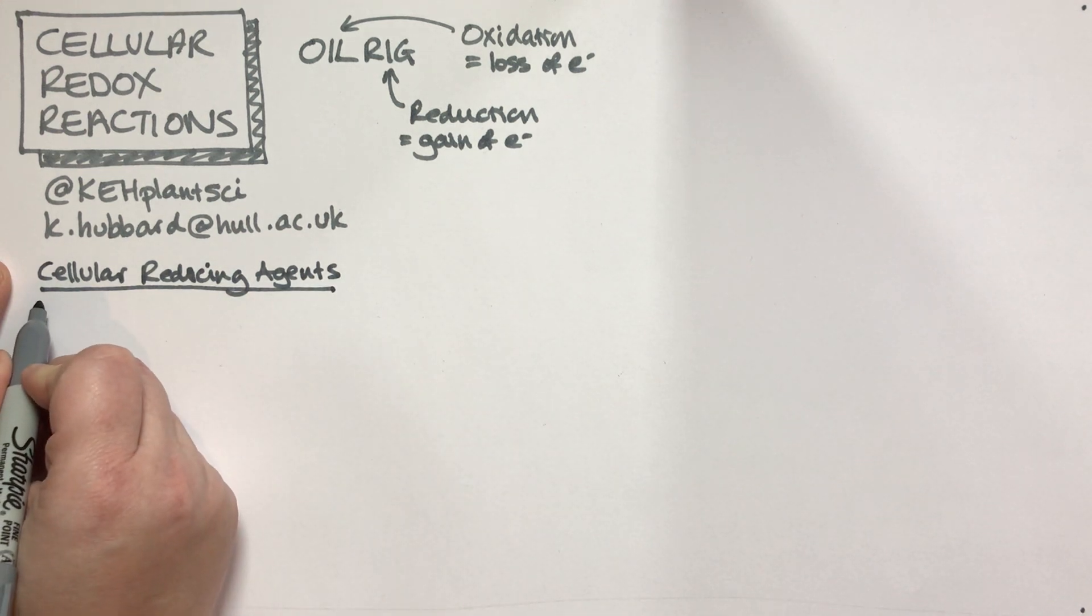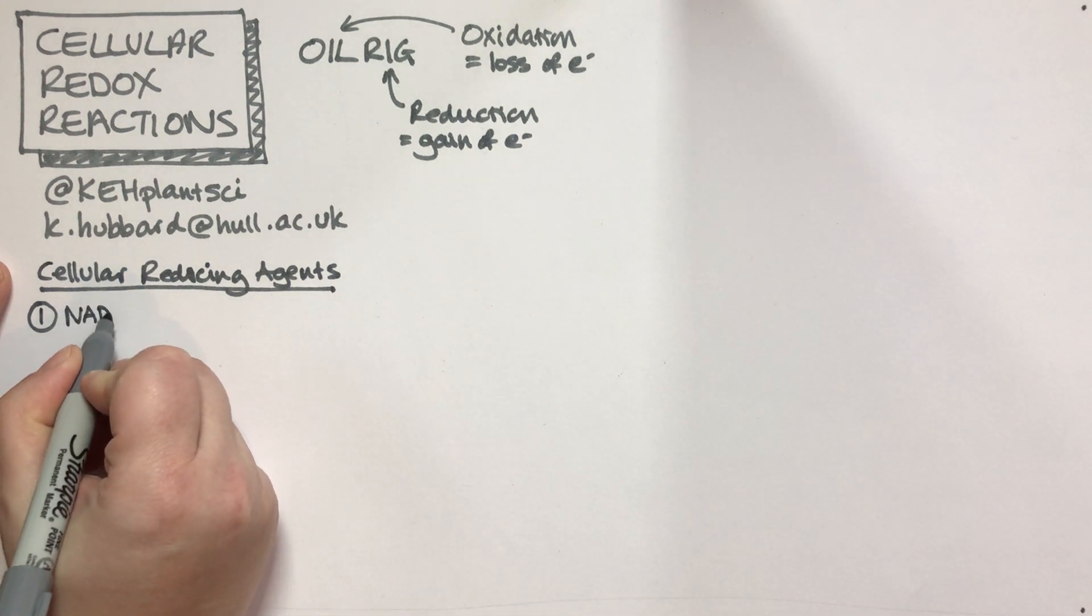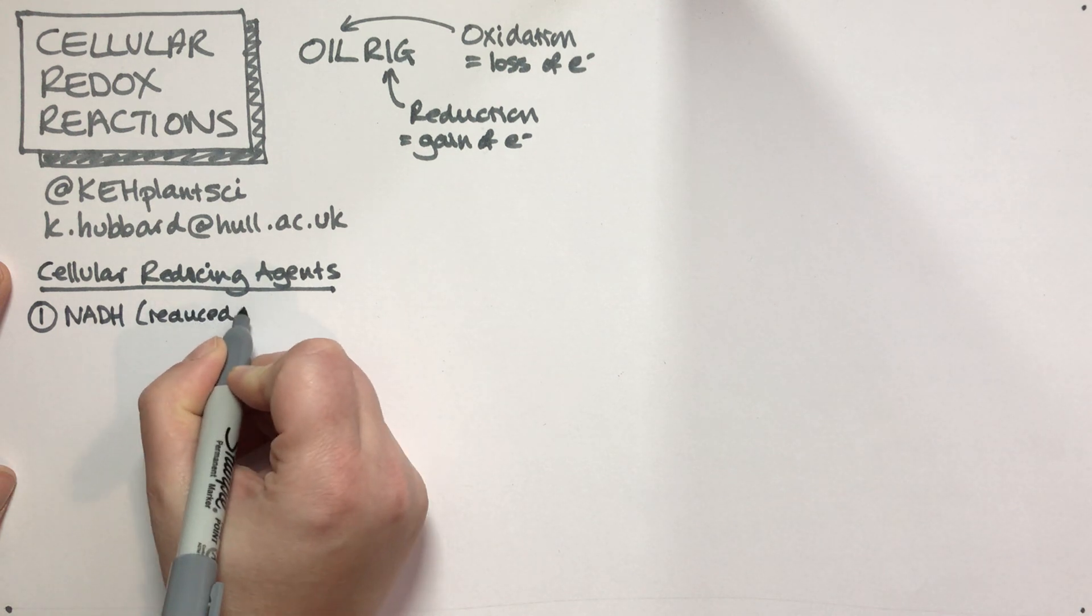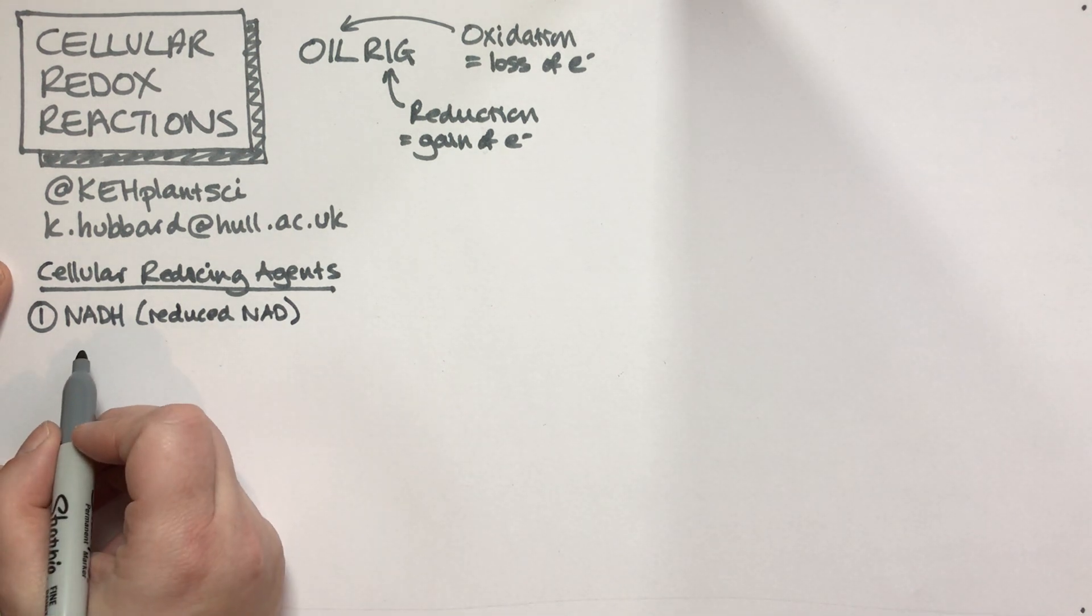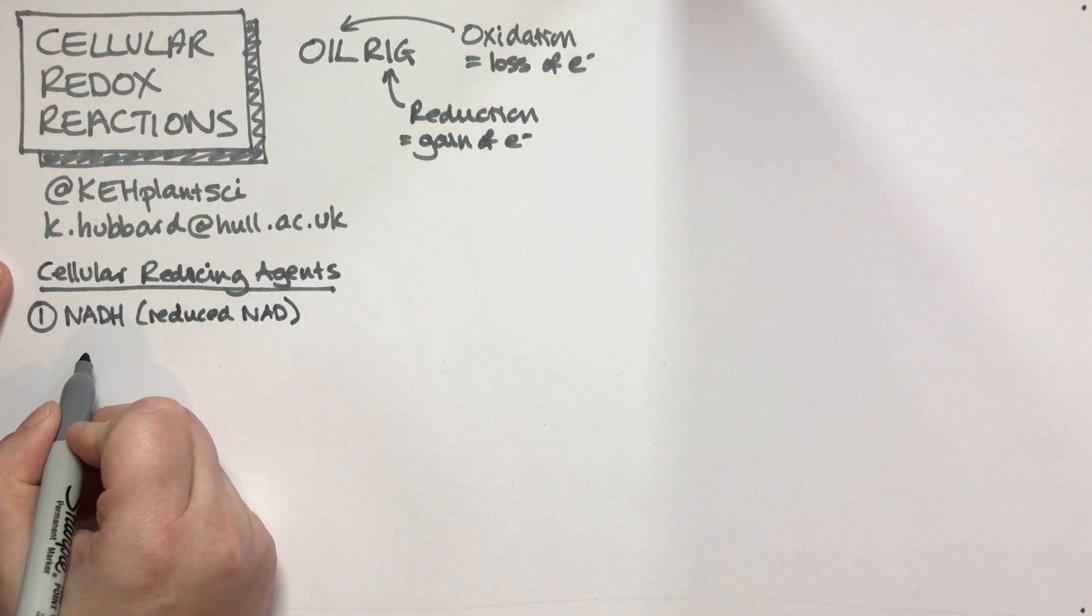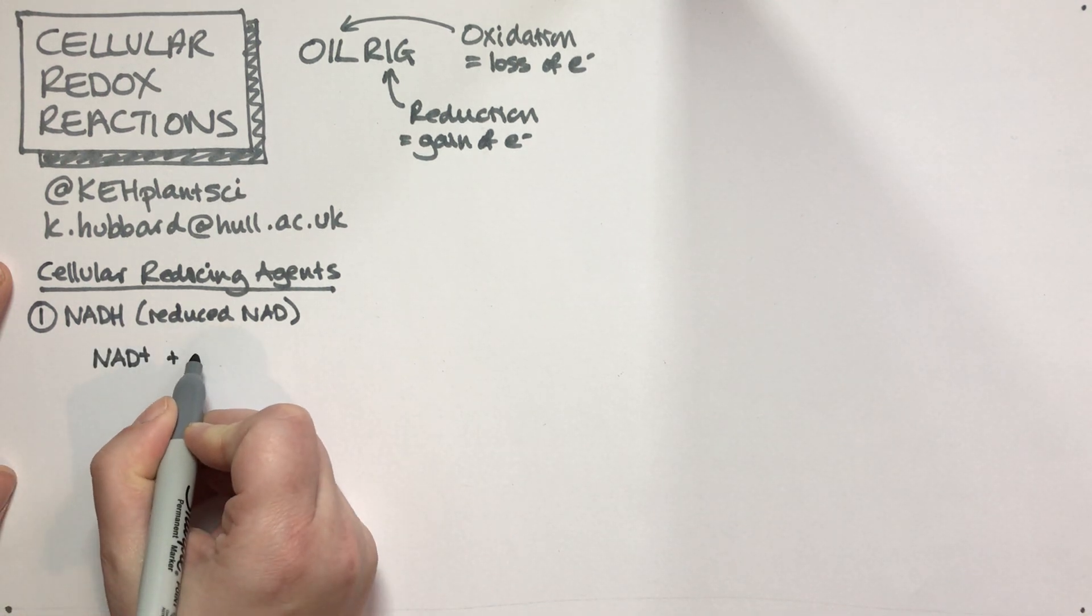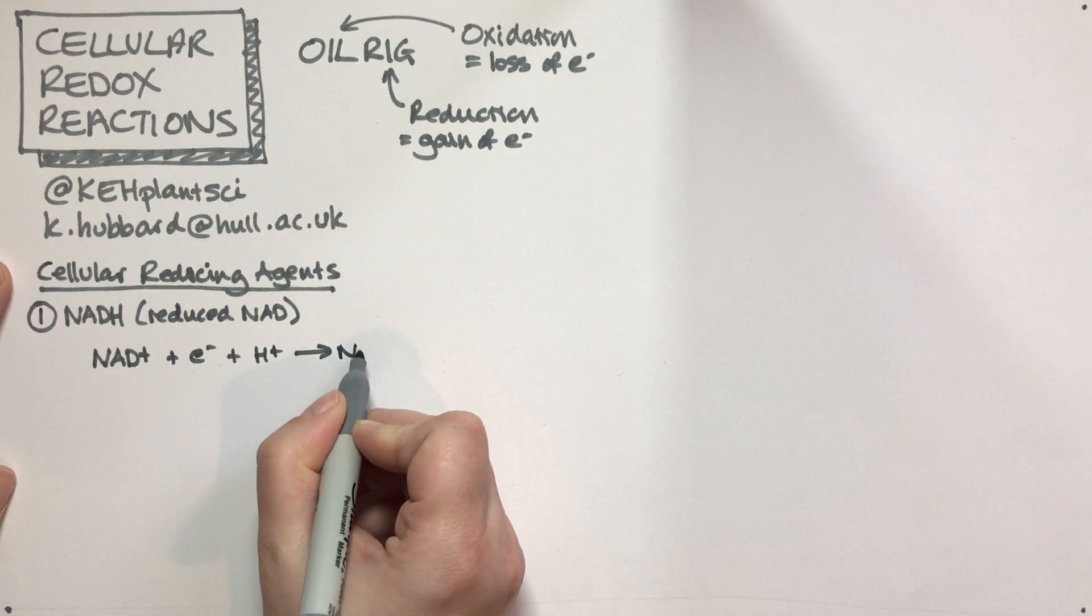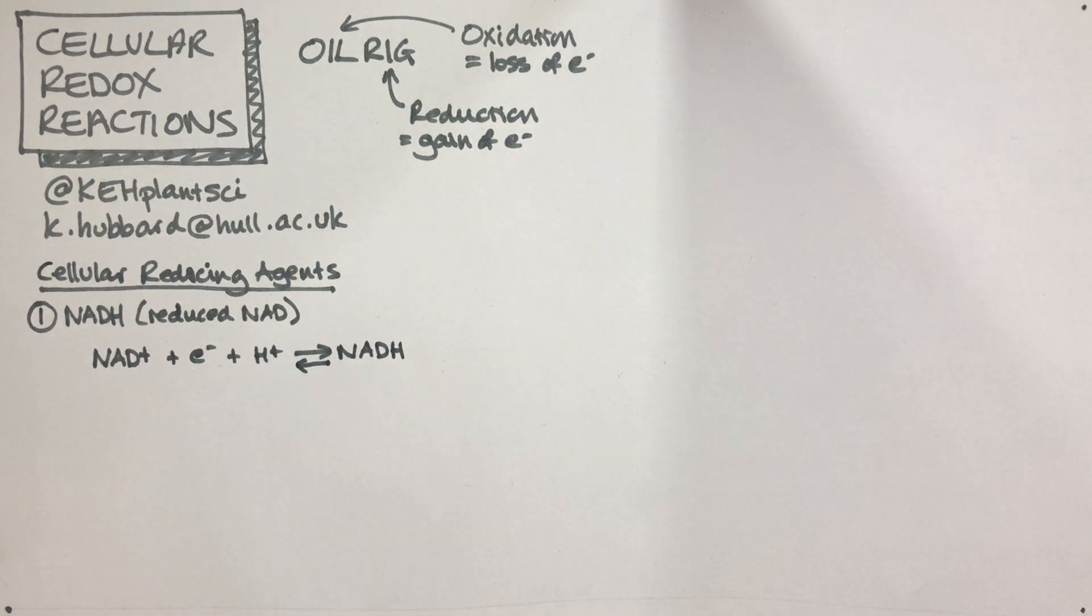The first one you might have come across before is NADH, sometimes referred to as reduced NAD. I'm going to call it NADH because I think that's more helpful. The reaction with NADH is: NAD+ + e- + H+ ⇌ NADH, and that's a reversible reaction.